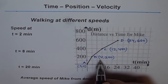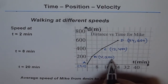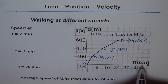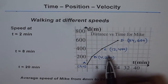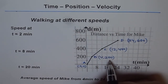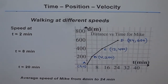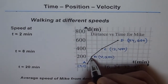These are called ordered pairs, like (4, 200), where the first value is the x-coordinate — in this case time t — and the second is the y-coordinate, the dependent variable, which is distance.